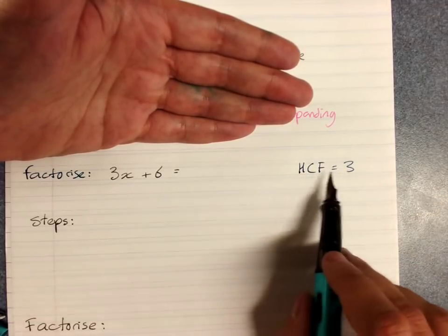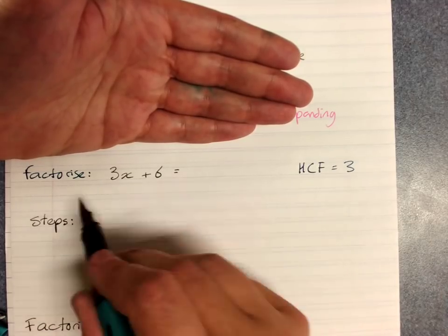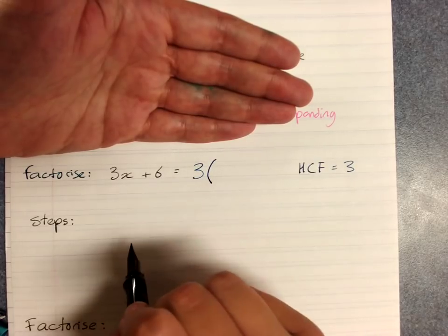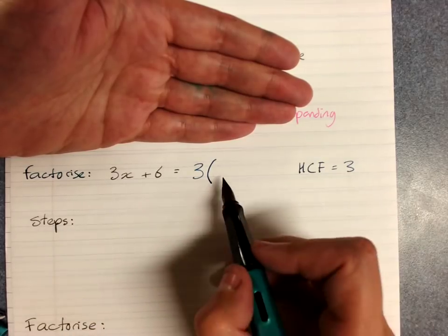We're looking for the highest number that goes into both terms. When we're asked to factorize, that comes out the front, and the remaining factors go in here.